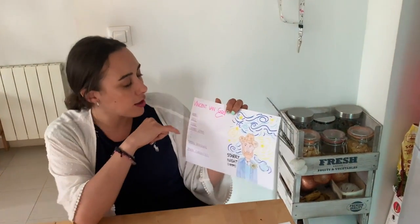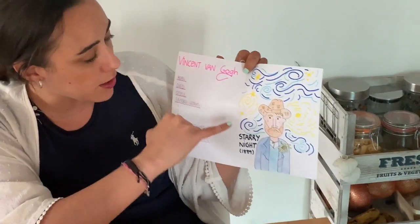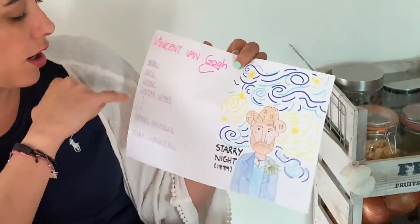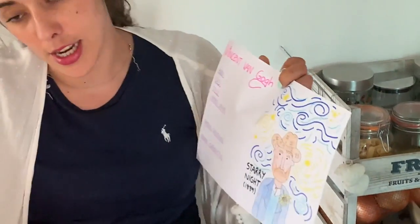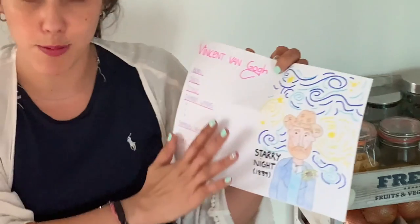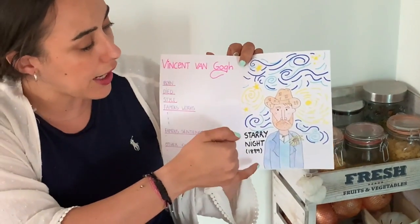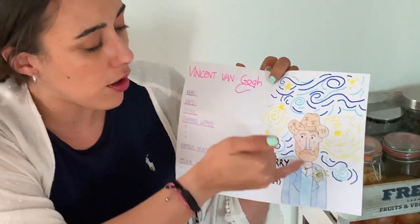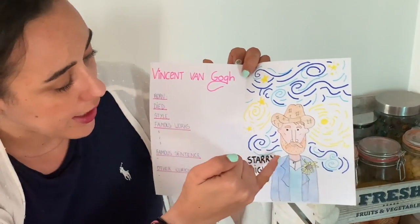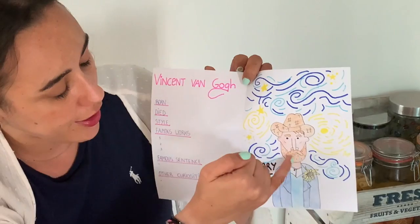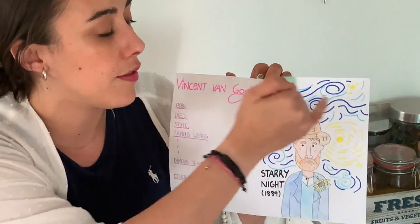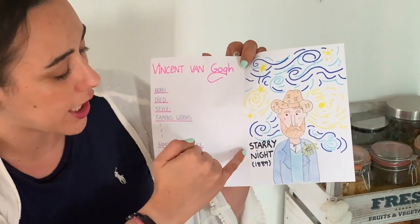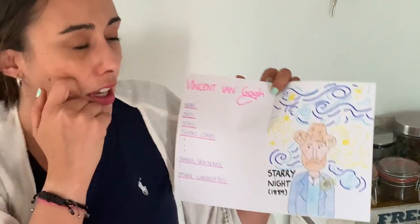For example, I've chosen Van Gogh, and then I will say: this painter was Vincent Van Gogh, he was born in... and then you explain everything. After this, you also explain the picture. For example, this is Van Gogh and he had a beard and a moustache, and this is one of his famous works called Starry Night. You just have to explain it to me.